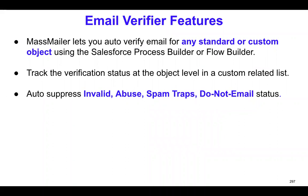The feature we have implemented is meant to auto-verify an email address on any object that has been enabled in MassMailer. You can use a Process Builder or Flow Builder — both are the same — and you can track the verification status at the object level, which is a custom related list called MassMailer Verify Status. Anything that is invalid, abuse, spam trap, or do-not-email status, we auto-suppress them, which means when you're trying to send out an email next time, those get auto-suppressed.